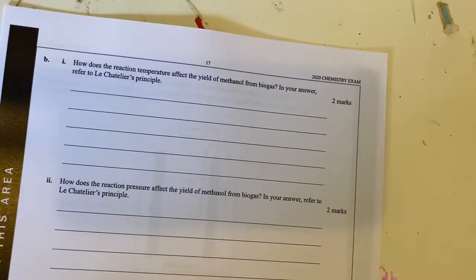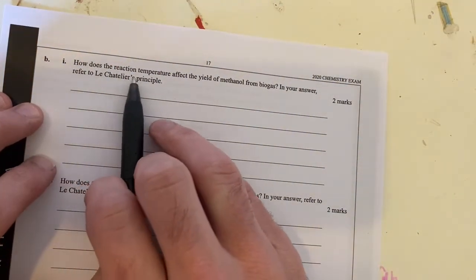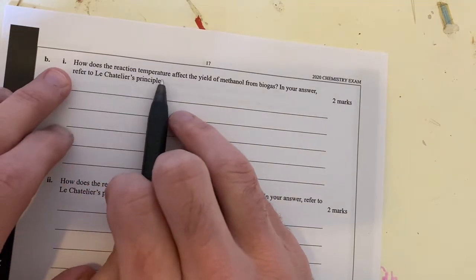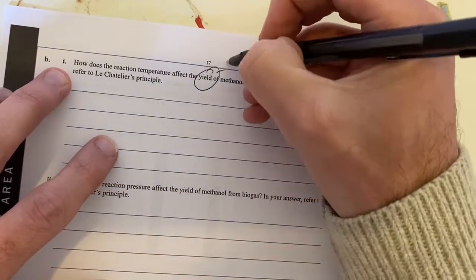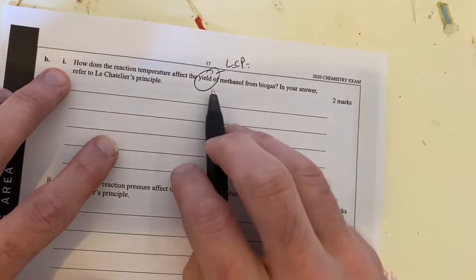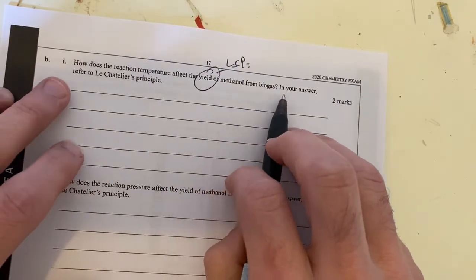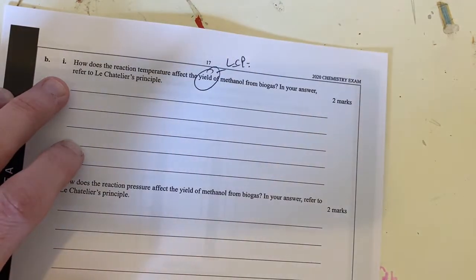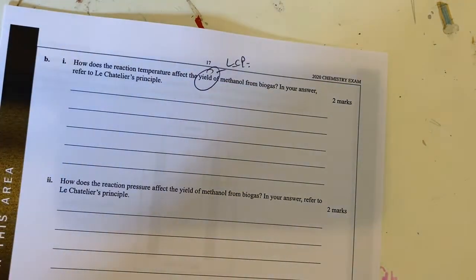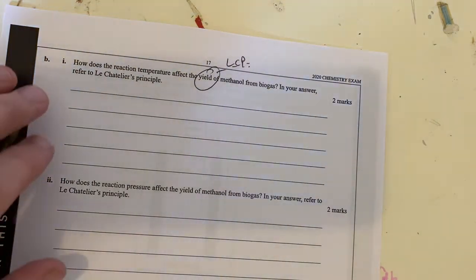Part B, let's have a look at this. How does the reaction temperature affect the yield? Yield is your Le Chatelier's principle of methanol from biogas. In your answer, refer to Le Chatelier's principle. So let's have a look at what we've got. It's all based around the delta H. So therefore, let's just take an example. Let's just take if we increase temperature, what's going to happen?